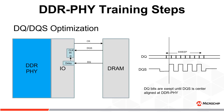For DQ-DQS optimization, default patterns are serialized, sent out from the DRAM on each DQ bit, and captured with DQS by the PHY. Each DQ is swept until the correct pattern is detected. The leading and trailing edges of DQ are found through sweeping, and the midpoint of the delay is selected. DQS is now center aligned with respect to DQ at the PHY.